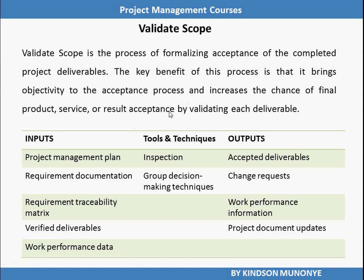So what does it mean? During Scope Validation, it has to do with acceptance of the deliverable by the customer. The customer examines the deliverables and either says it's okay or it's not okay. So let's now look at the inputs, the tools and techniques, and the outputs of the Validate Scope process. We are going to go through all the inputs, outputs, and tools and techniques, and then we take some time to look at them in detail.